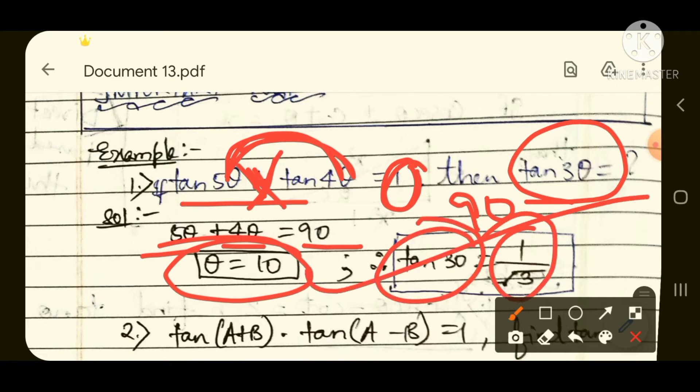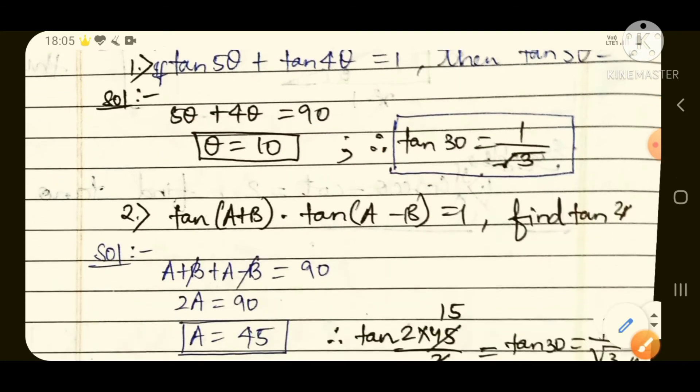So tan 3 times 10, which will become tan 30, and the value of tan 30 is 1 by root 3. See how much time you took to find out the answer. For explaining it is taking time, but when you solve really in the examination, it will take just 2 to 3 seconds only.